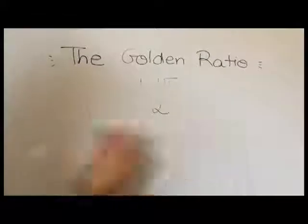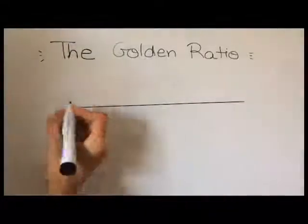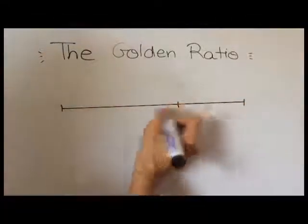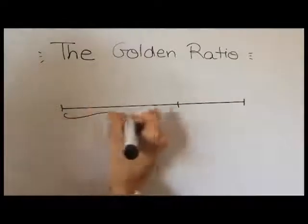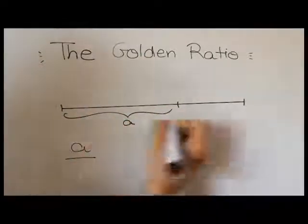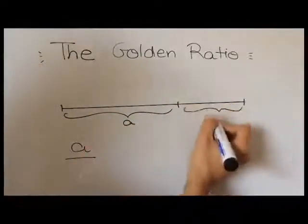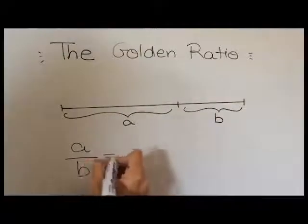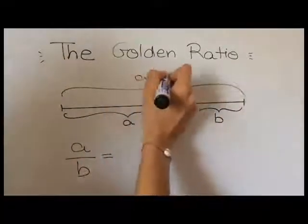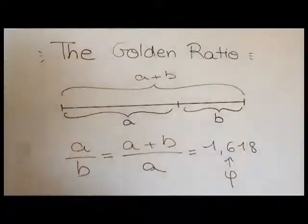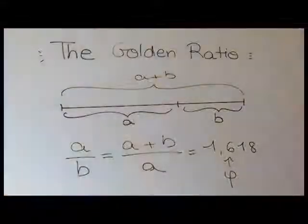Phi is defined as a ratio between two lengths. If you have a line, or any other figure, and you divide it into two parts so that the longer part called a divided by the smaller part called b is also equal to the whole length a plus b divided by the longer part a, this line respects the Golden Ratio.